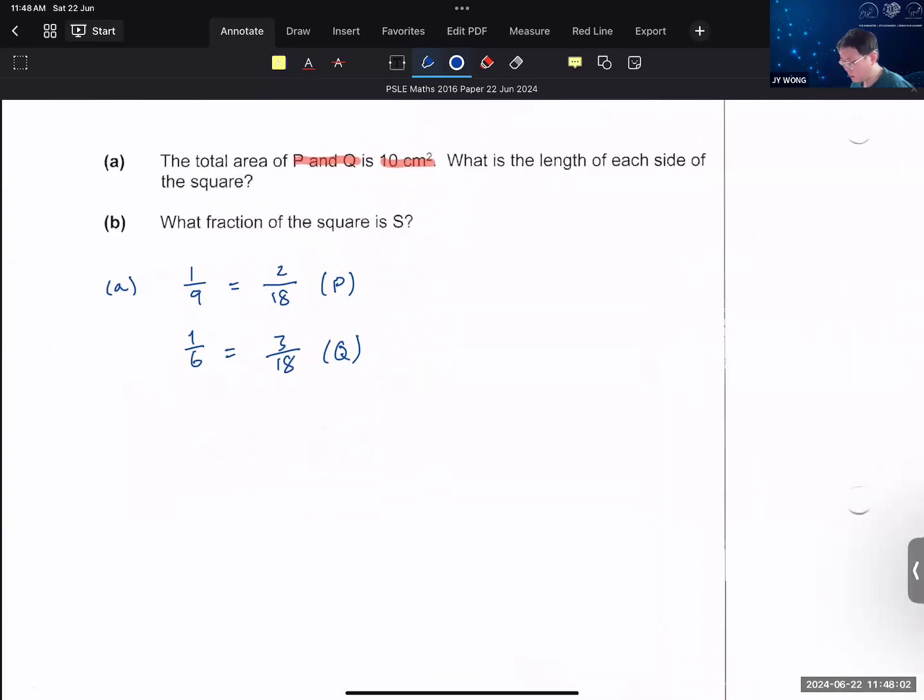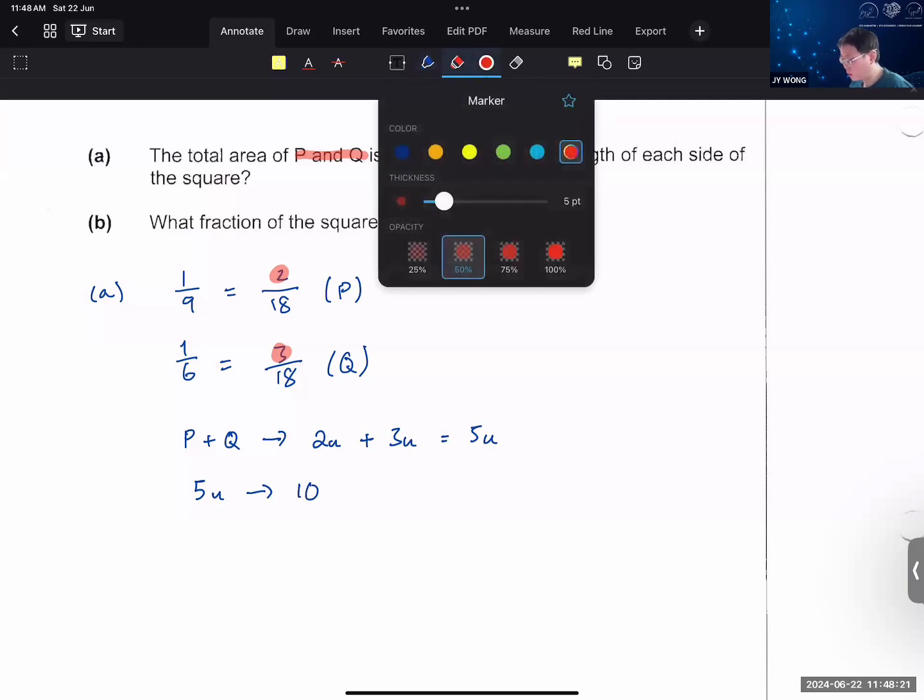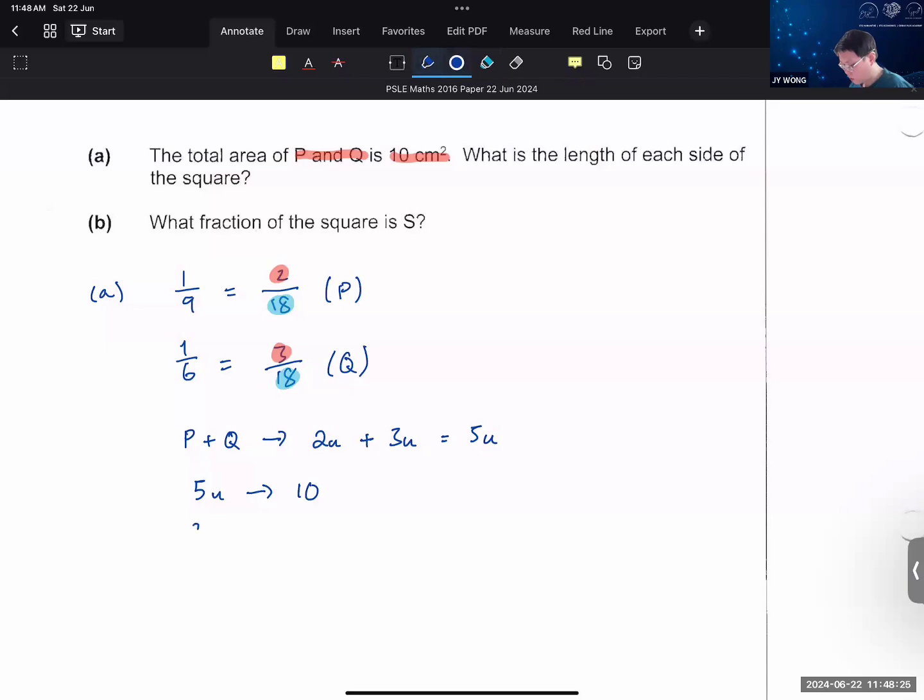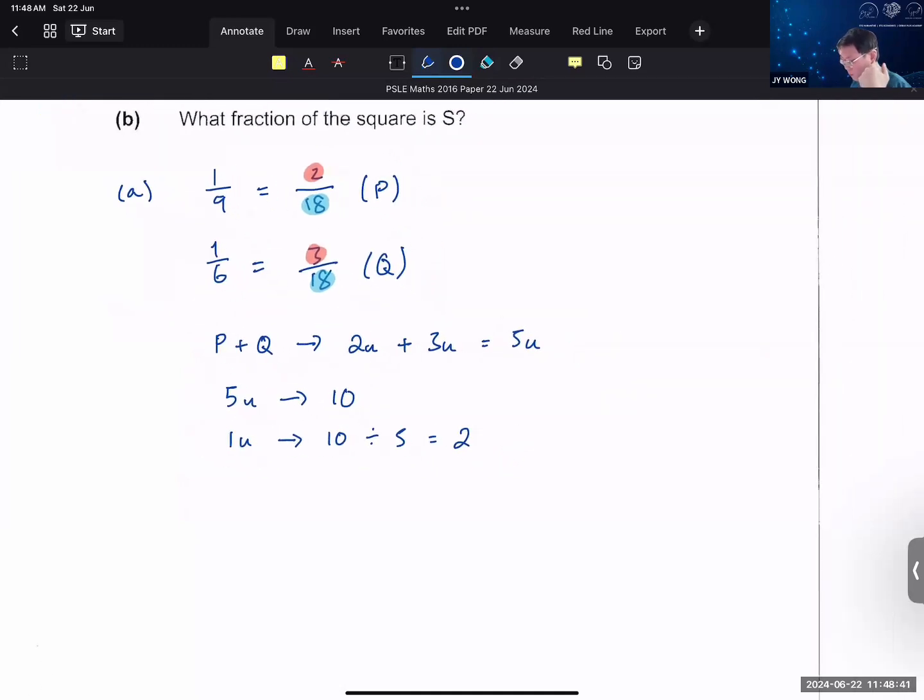In other words, P plus Q is how many units? So your area of P plus Q is 2 units plus 3 units to give you 5 units, and that gives you 5U is an area of 10 cm². And if you look at the denominator, what is the total number of units? So your 18 units. So that gives you 1 unit is 10 divided by 5 to give you 2. And your square is just 18 units.